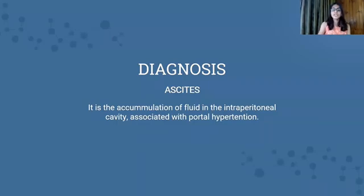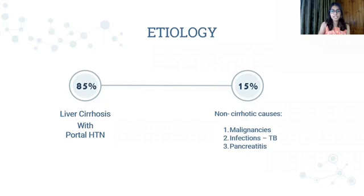Ascites is the accumulation of fluid in the intraperitoneal cavity associated with portal hypertension. Ascites can have various different etiologies. The most common one is liver cirrhosis with portal hypertension, which accounts for 85% of its cases. The remaining 15% is caused by non-cirrhotic causes, like malignancies with metastasis in the abdomen, infections like tuberculosis, and pancreatitis.